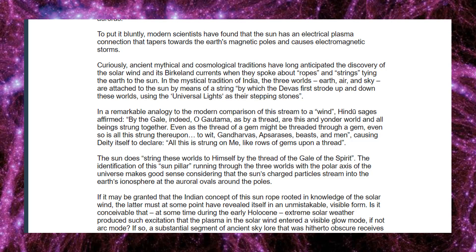Curiously, ancient mythical and cosmological traditions have long anticipated the discovery of the solar wind and its Birkeland currents when they spoke about ropes and strings tying the Earth to the Sun. In the mystical tradition of India, the three worlds — Earth, air, and sky — are attached to the Sun by means of a string, by which the divas first strode up and down these worlds using the universal lights as their stepping stones. In a remarkable analogy to the modern comparison of this stream to a wind, Hindu sages affirmed: 'By the gale indeed, oh Gautama, as by a thread are this and yonder world and all beings strung together. Even as the thread of a gem might be threaded through a gem, even so is all this strung thereupon.'